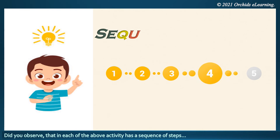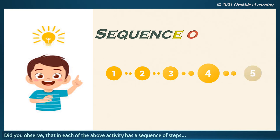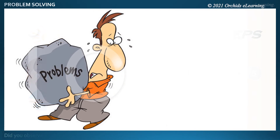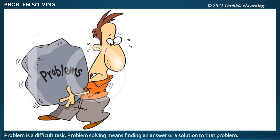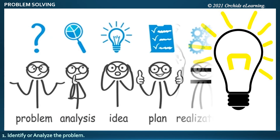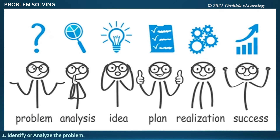Did you observe that each of the above activities has a sequence of steps? Problem solving: a problem is a difficult task. Problem solving means finding an answer or a solution to that problem. The steps involved in problem solving are: identify or analyze the problem, and list the steps to achieve a solution.